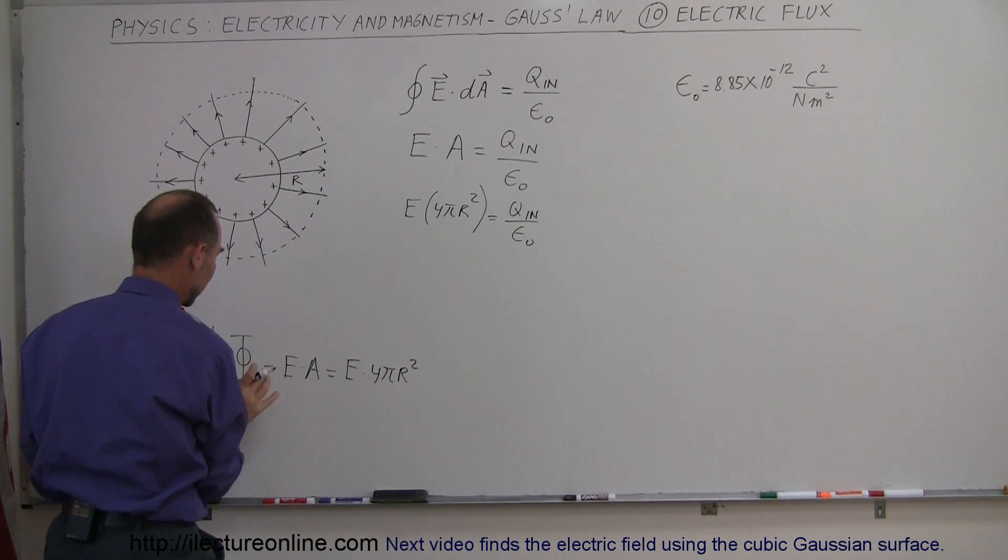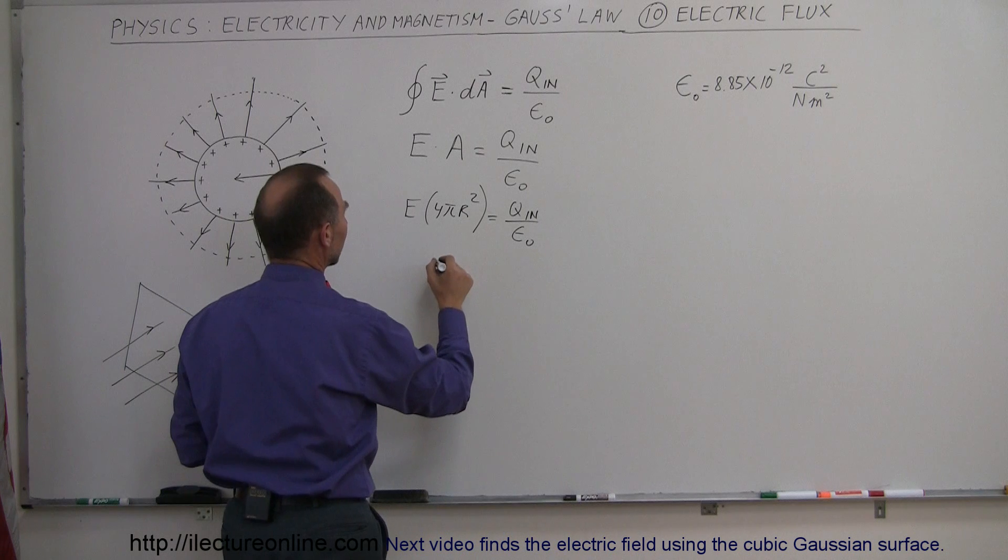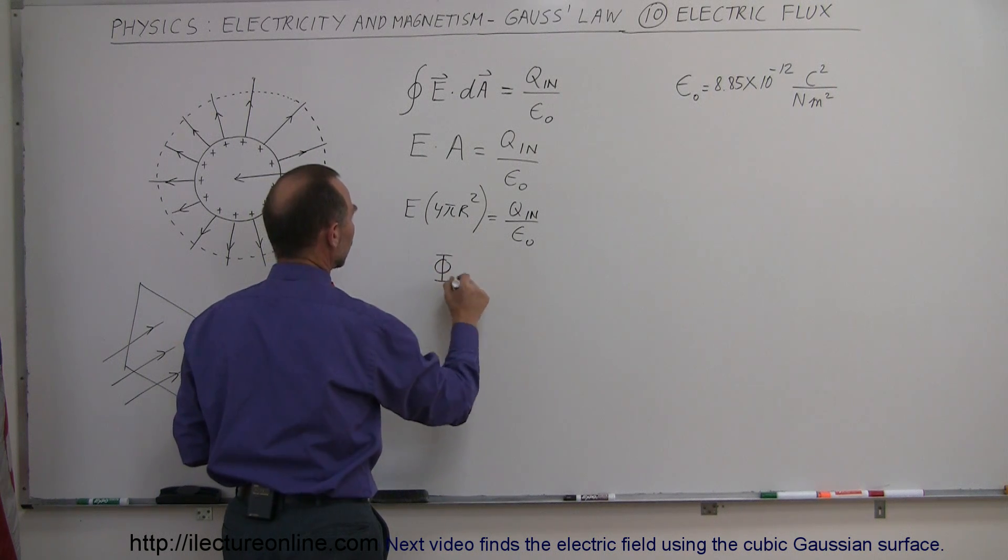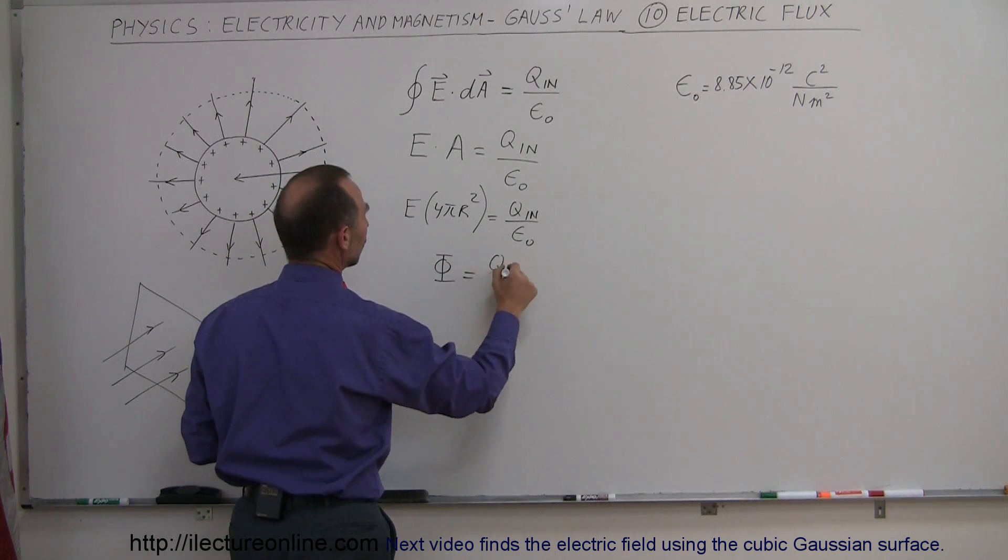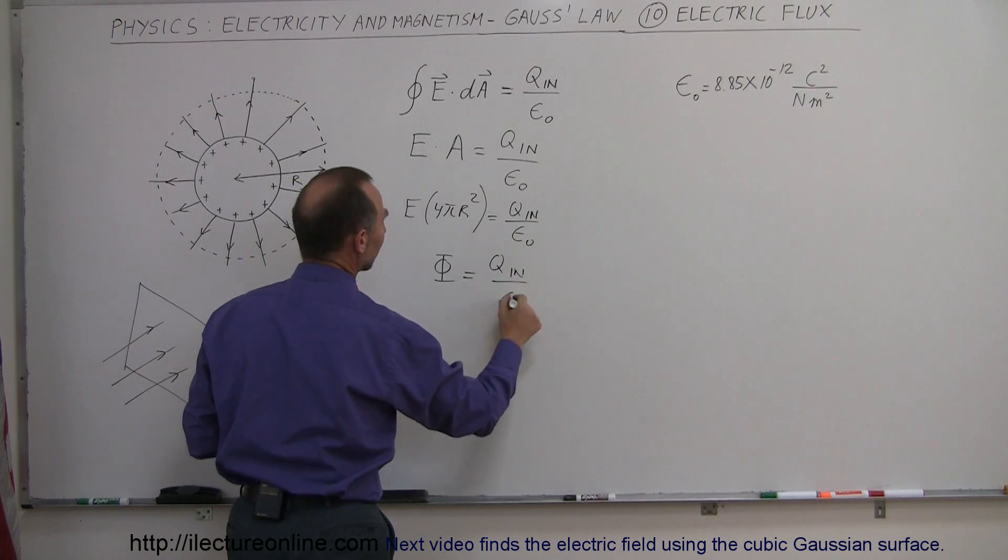So therefore, since this equals the electric flux through the surface, we can say that the total electric flux through the Gaussian surface is equal to Q inside divided by epsilon naught.